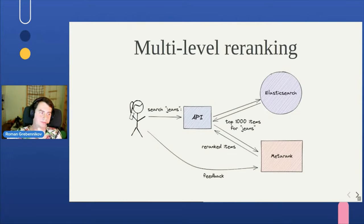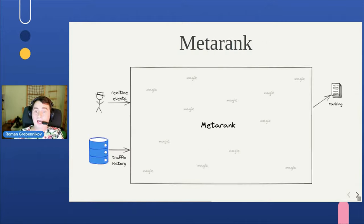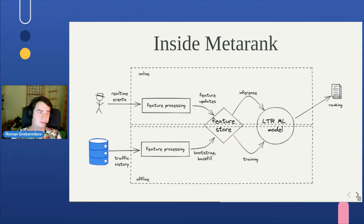It won't replace Elasticsearch for you. For a given query, you take the top 1,000 matching products from Elasticsearch and throw them to Metarank, which will reorder them according to the feedback it received from customers. The prediction is based not only on real-time events from customers but also on the traffic history you have. It's not magic — it's built on the typical 2020 approach: a feature store with offline feature processing and online feature processing joined together, you train your model and call it a day.